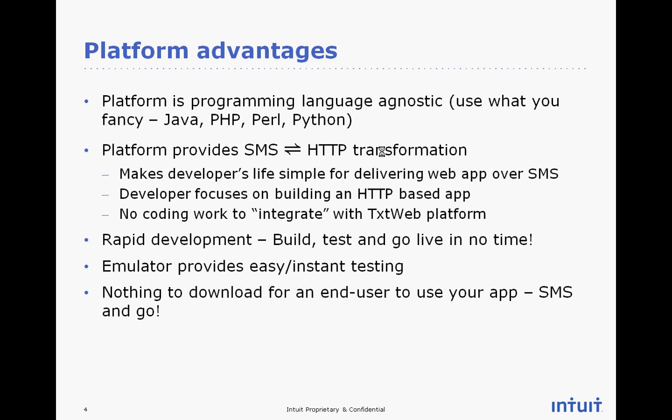There is also an emulator which helps you do easy and instant testing without having to use an actual phone handset for sending and receiving SMSs. In terms of user adoption, there is no application or anything that the end user needs to download. All you need to do to publish your application and have your audience start accessing it immediately is for them to send an SMS to the TextWeb platform using the well-known TextWeb number, specifying your app name as a keyword with the @ sign.